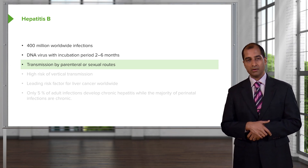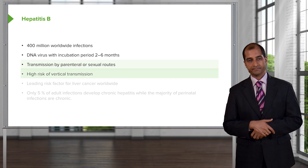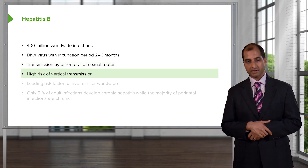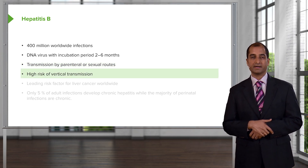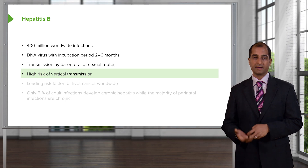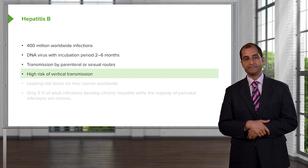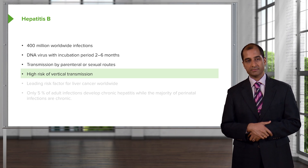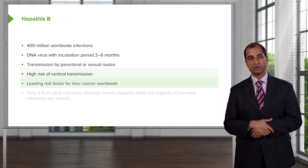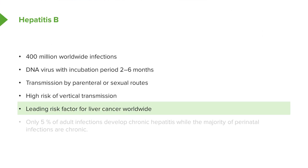Transmission occurs via parenteral or sexual routes. There is a high risk of vertical transmission — think about a pregnant lady giving birth. During delivery, through the vaginal canal, there might be vertical transmission to the newborn. Think of this as being part of your TORCH. Hepatitis B is the leading risk factor for liver cancer worldwide. Also keep in mind hepatitis C, and make sure you know how to identify hepatitis B or C.